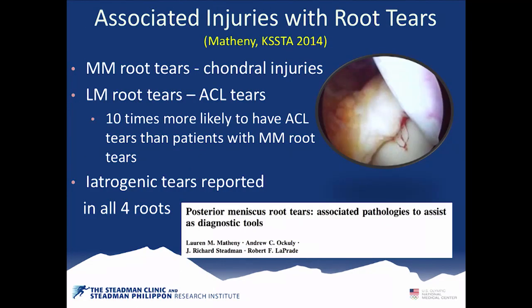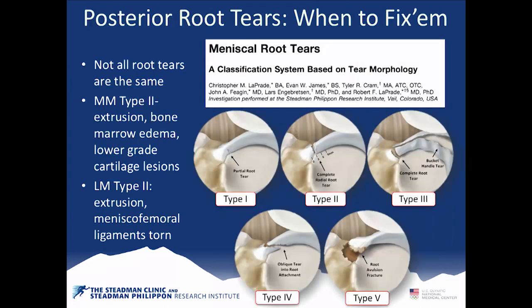When looking at associated injuries with root tears: medial meniscus root tears usually cause articular cartilage problems, and lateral meniscus root tears are almost always associated with ACL tears. We also published on iatrogenic meniscal root tears for all four root attachments. We developed a classification system based on tear morphology — almost all of them are type 2, which results in the radial tear with extrusion.